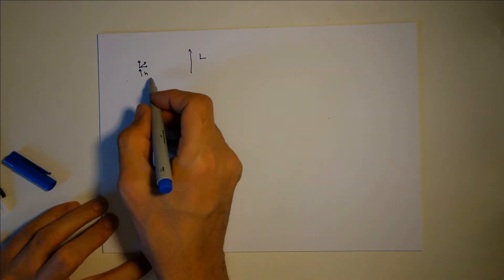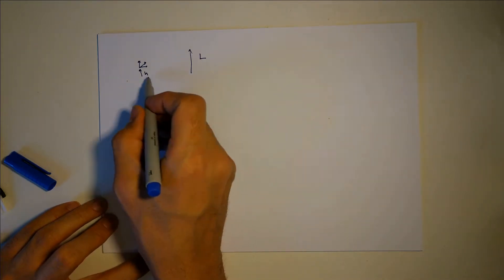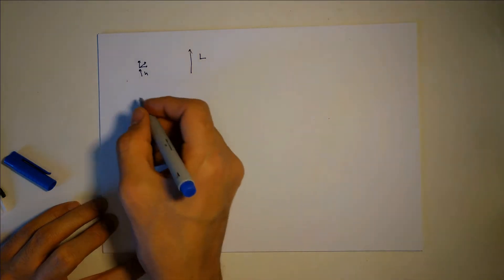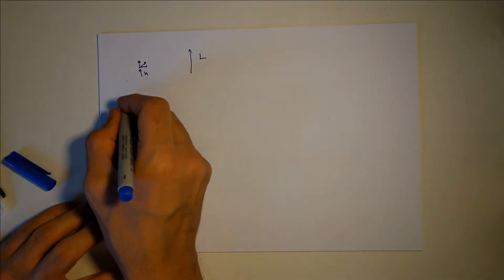And what you're looking for is Z, how far you should stay away from that, because the more you go back, the smaller the object will be.